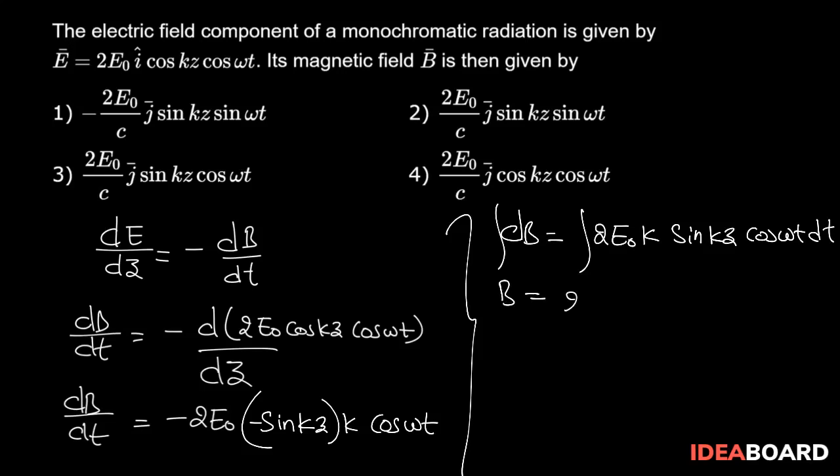B will become 2E₀k sin kz, and integration of cos ωt is nothing but sin ωt divided by ω.